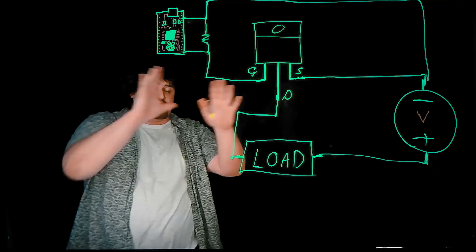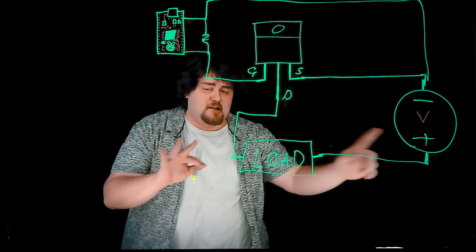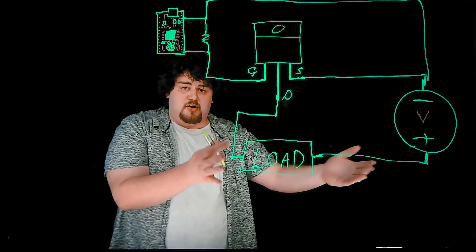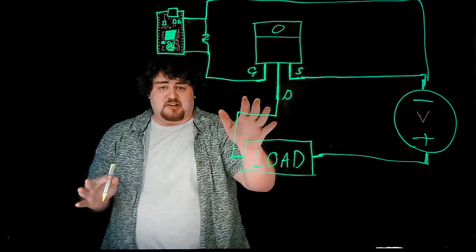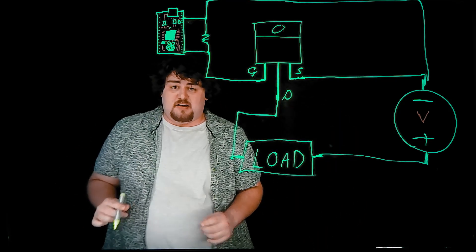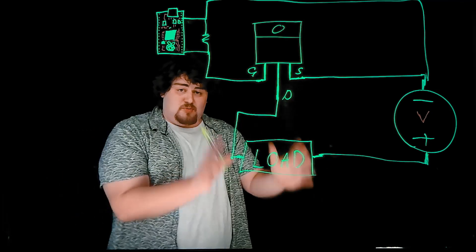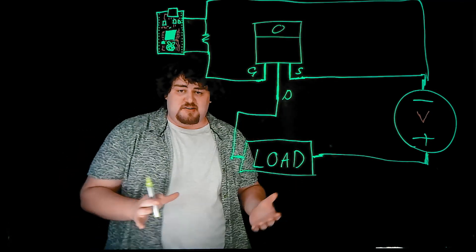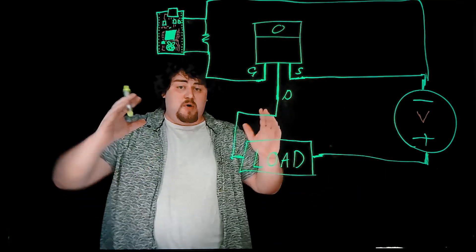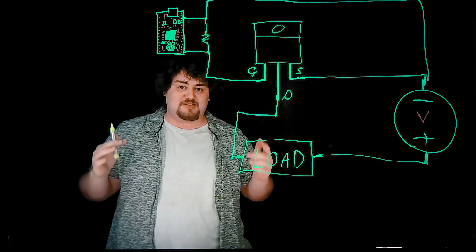That is our circuit all nice and wired up. We set high on this pin, we allow current to flow and turn our circuit and load on. We set it to low, we don't let current flow and it turns off. We can put anything for our load — a 24 volt motor, a 12 volt LED — as long as our power supply can power it, we just set this pin high and low and control it like a switch.